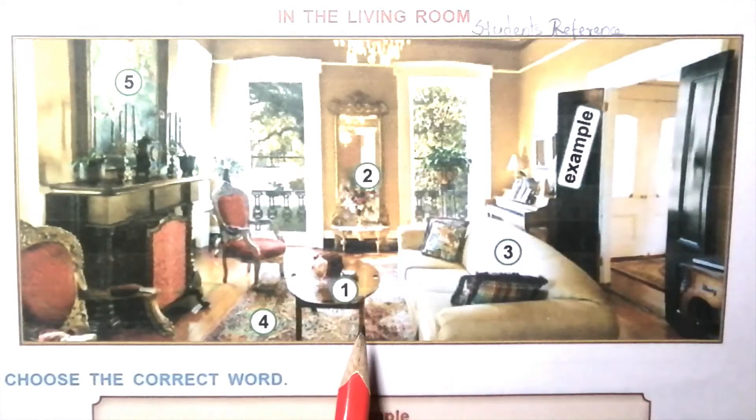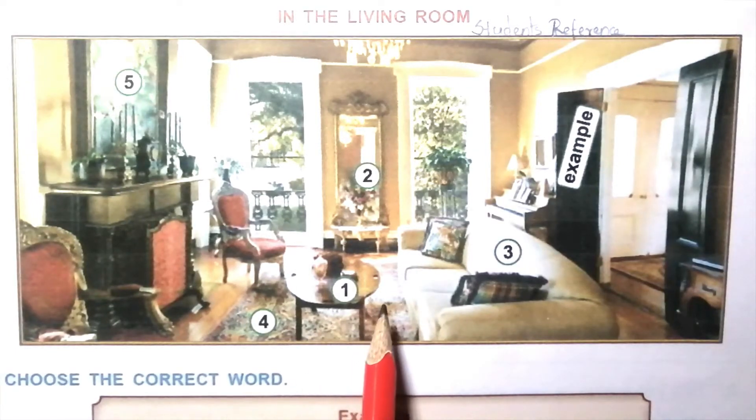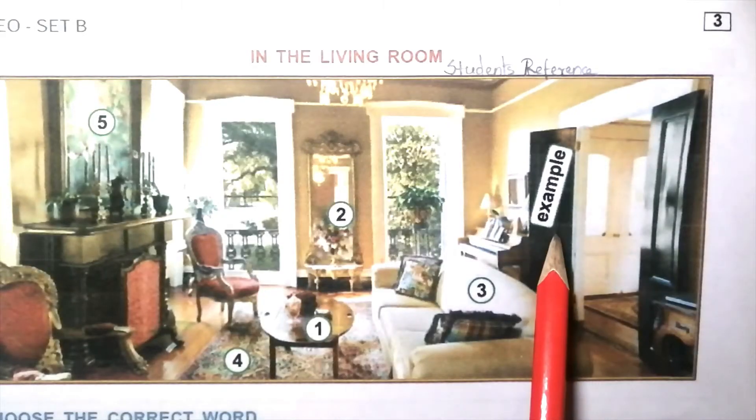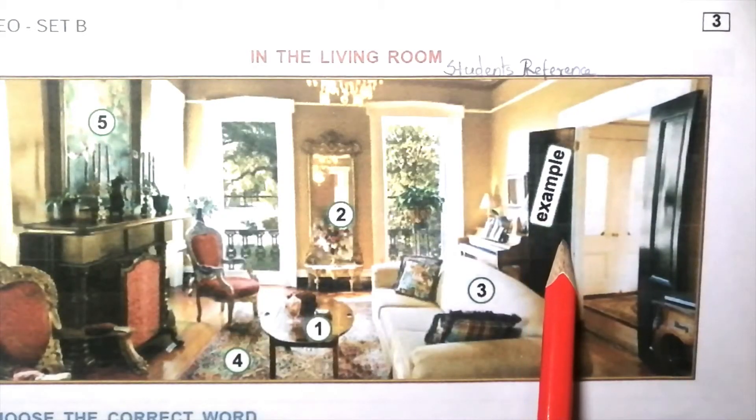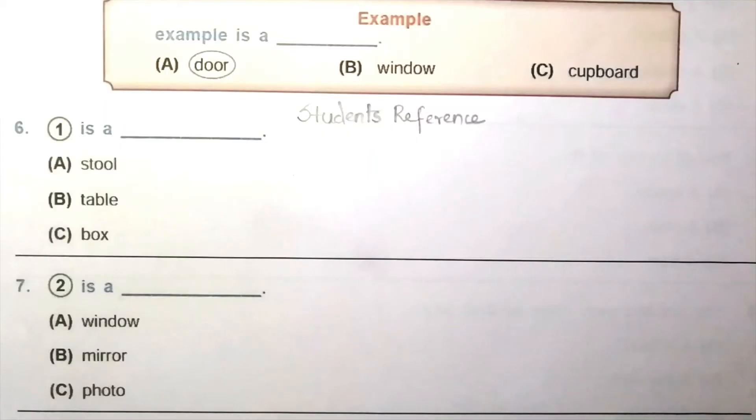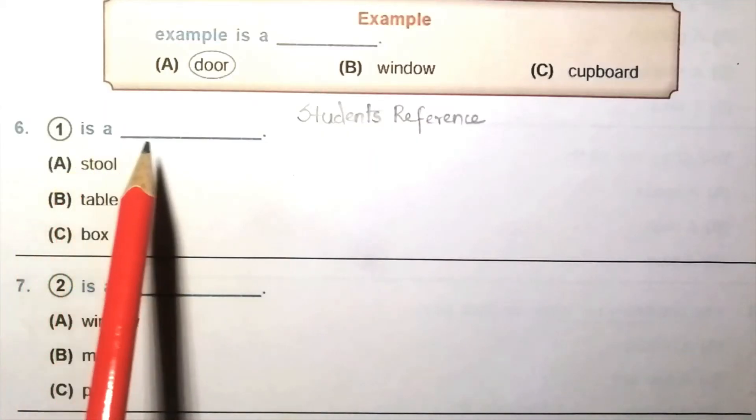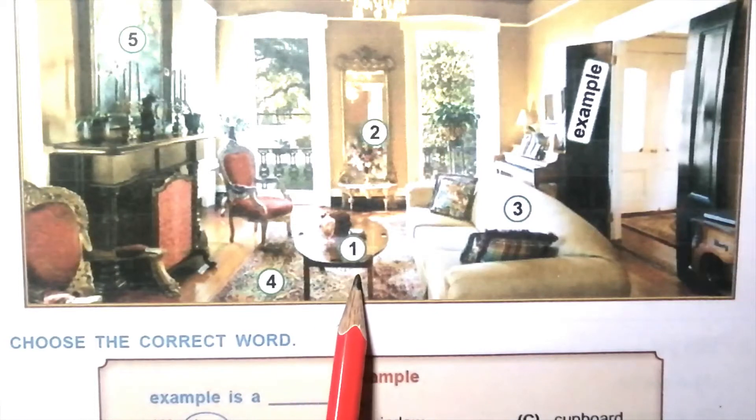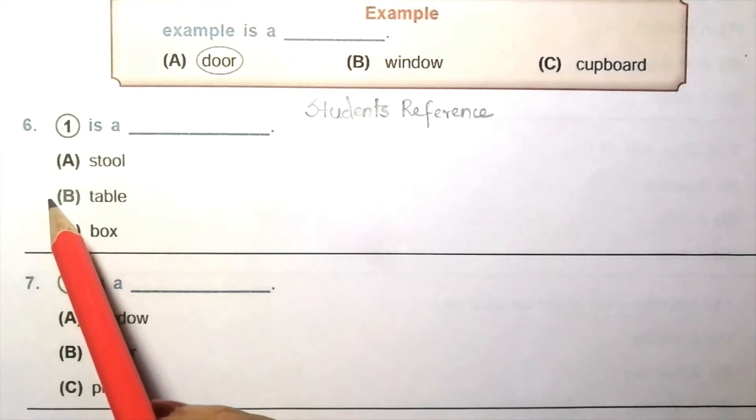Question 6: Look at the given picture carefully. This is a living room. Choose the correct word. Example is A, door. In the given picture, example is A, door. Question 6: One is blank. Stool, table, box. So in the given picture one is a table. The answer is B, table.